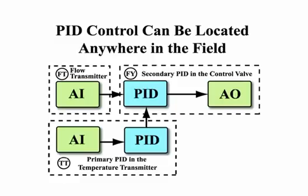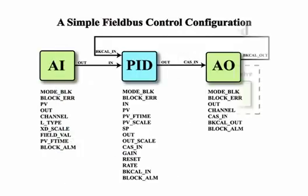In a section covering the user layer, you will learn about the software configuration of a Fieldbus system to develop control strategies using function blocks distributed in the field. We also present configuration options and their impact on Fieldbus data communications. We present typical Fieldbus control configurations and the function blocks required. This includes detailed coverage of function block interconnections or linking logic and the tuning and configuration parameters for analog input, PID, and analog output function blocks.